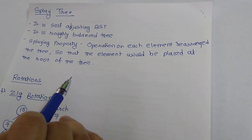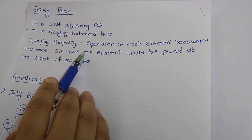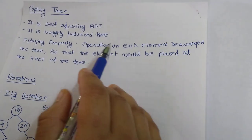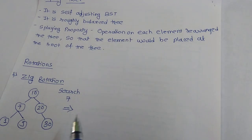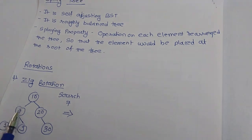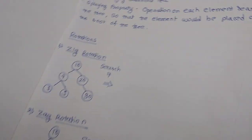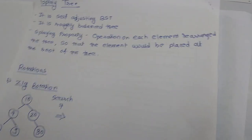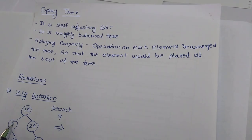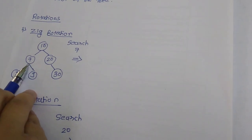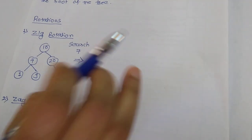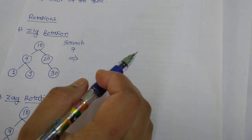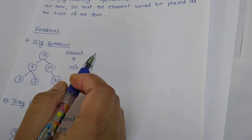One more important thing in the Splay Tree is the Splaying property. What the Splaying property says is that every operation on an element will rearrange the position of that element and bring it to the position of root. Suppose I want to perform any operation on 7 — after that operation, 7 will take the position of root. Now there are some rotations in the Splay Tree; we will discuss them one by one.